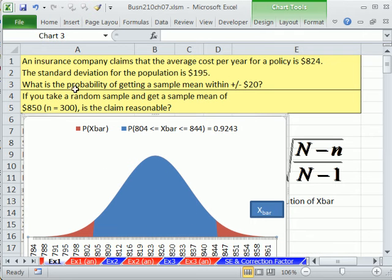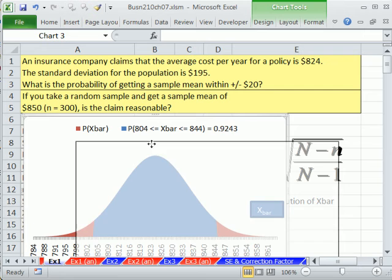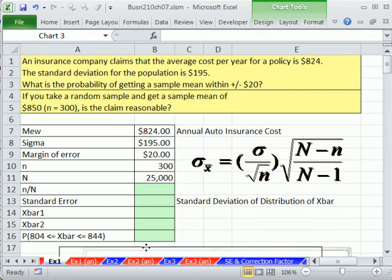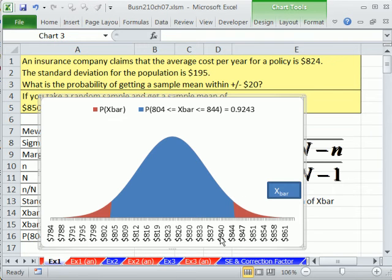And then second, we'll ask, if you take a random sample and get a sample mean of $850, is the claim reasonable? So this is a way of testing. Here's a claim from an insurance company. And we want to go out and take a sample, compare it to our sampling distribution of x-bar, and see if it's reasonable or not. I'm going to pull this out of the way. A picture sometimes tells 1,000 words. So we have mu, and we saw last video that if we know mu from the population, we know that that'll be the mu sub x-bar or our expected x-bar.